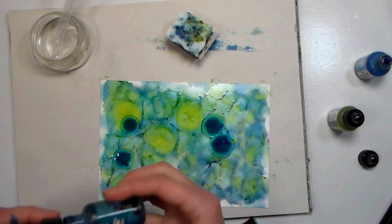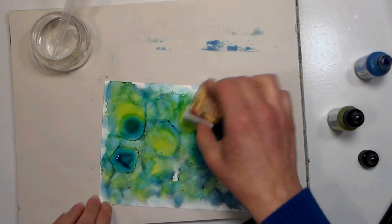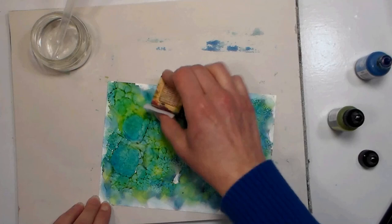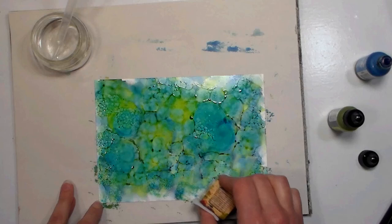You end up getting kind of like a geode look to it, and you can keep playing with it as much as you want. The advantage of having the Yupo paper versus a glossy cardstock is that you can always kind of remove that ink. It might stain the paper a little bit, but you can get back to that white. You don't end up with a muddy dark color like you could.